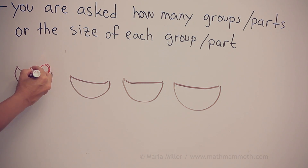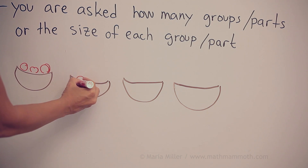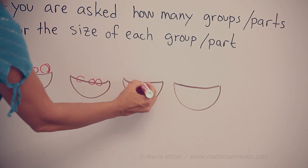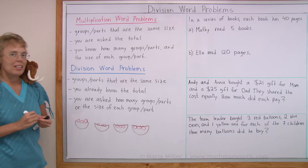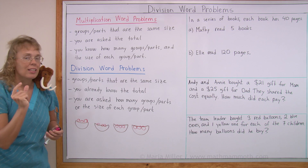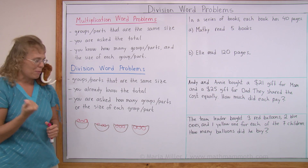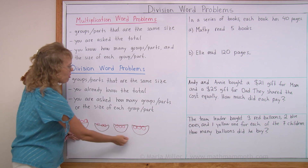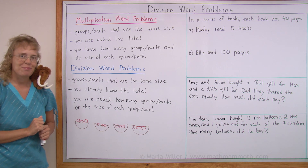Let's say you have some apples — each basket would have the same number of apples. Maybe three apples. And then I would ask the total. That would be a multiplication word problem. You would solve four times three — twelve apples.